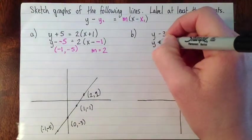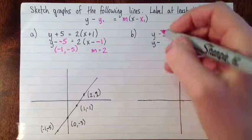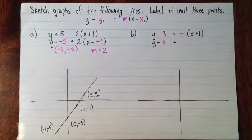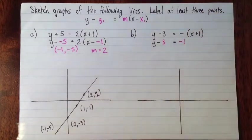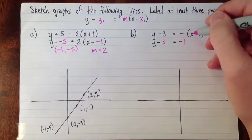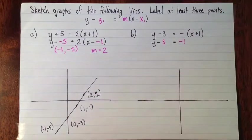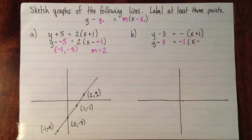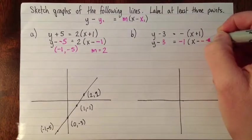So here, y subtract, and that's just 3, equals, and I'm going to take this negative sign and I'm just going to write that as -1, because -x + 1 is the same as -1 times that. x + 1 is the same as x - (-1).